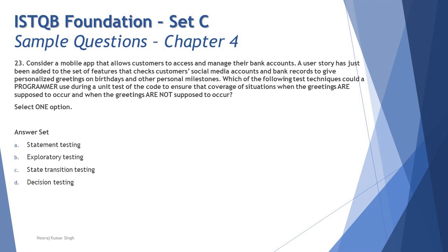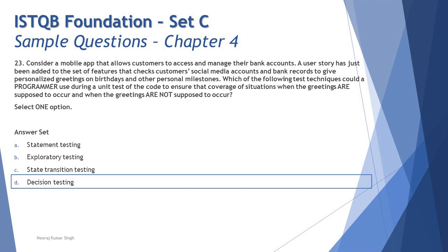The decision outcomes are tested by decision testing. Statements cover conditions — whether a condition will be executed — but whether all outcomes of a condition are tested is decision coverage. So we tackle the scenario simply: three points — programmer, unit test, outcome coverage — all point to decision testing. The right answer is D: decision testing, measuring outcomes coverage at unit testing level by programmers.